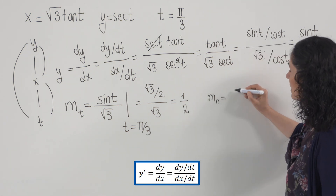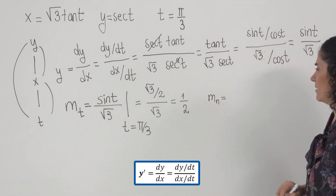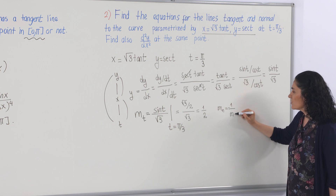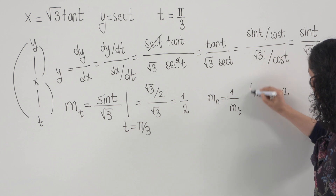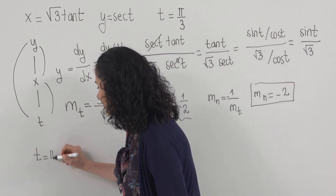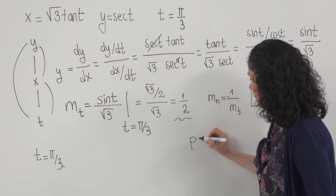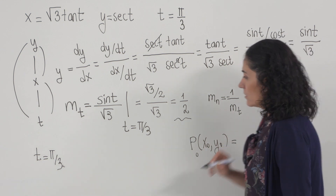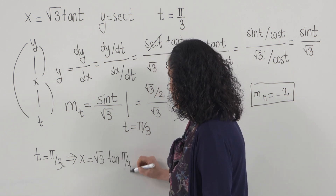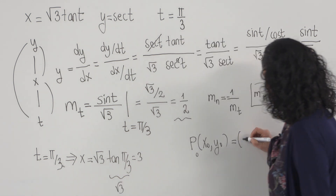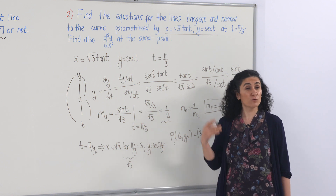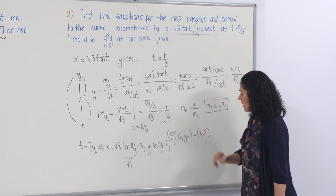The normal slope is m_normal = −1/m_tangent = −2. To find the corresponding point when t = π/3: x = √3 · tan(π/3) = √3 · √3 = 3, and y = sec(π/3) = 1/cos(π/3) = 2. So the point is (3, 2).